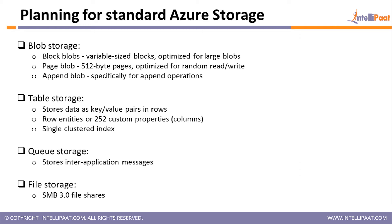Page blob is optimized for random read and write operations. Each block, accessed as a page, can be 512 bytes in size. Append blob is strictly for append operations, as it does not support modification to existing content.